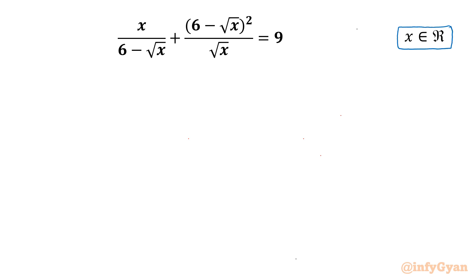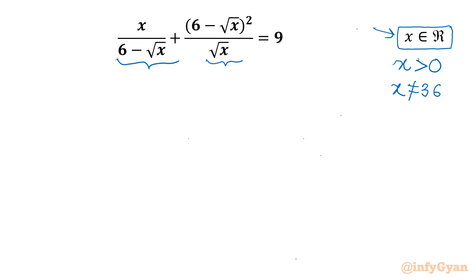Let's get started by writing values of x which we cannot accept. x should always be greater than 0 — it cannot be negative for real solutions, as √x is present. Also, x cannot equal 36, because 36 will make our first denominator 0. So these two constraints we have to keep in mind.